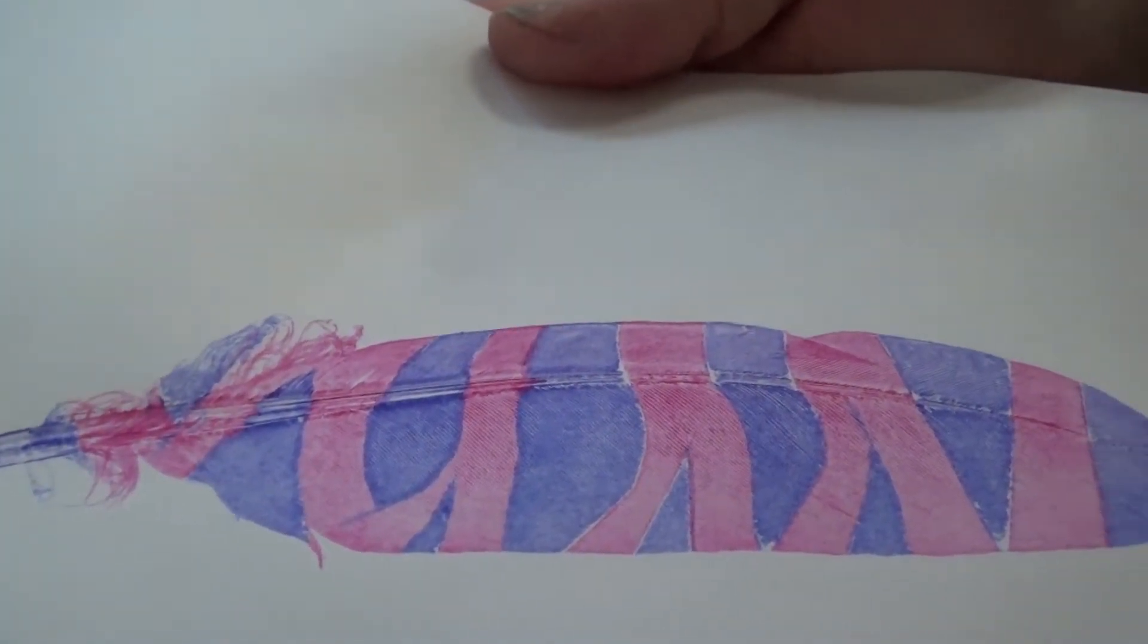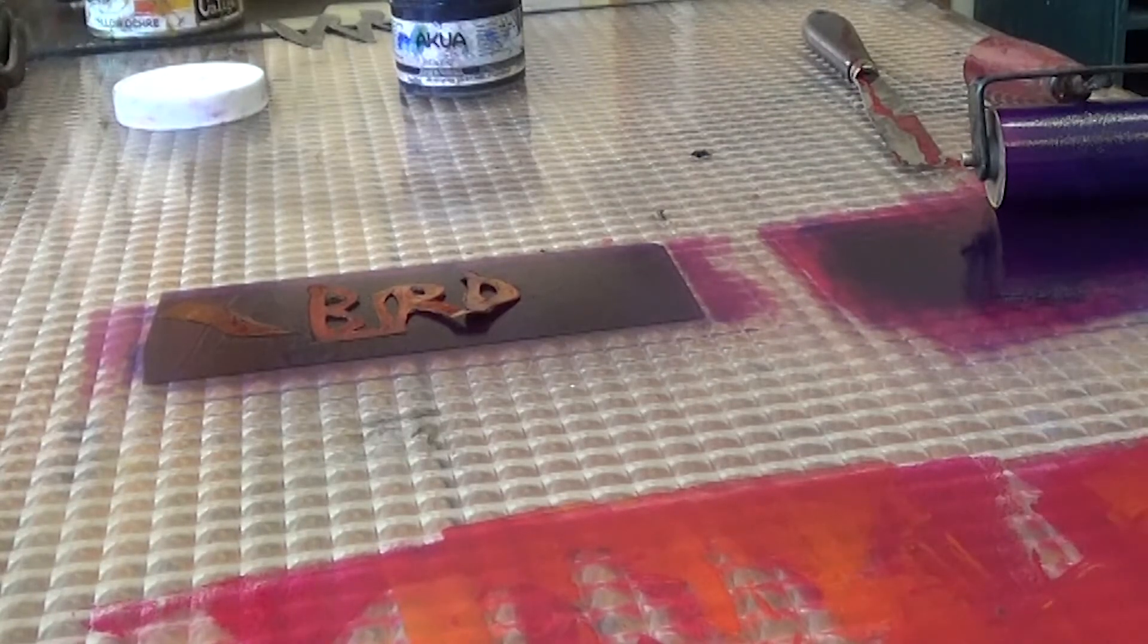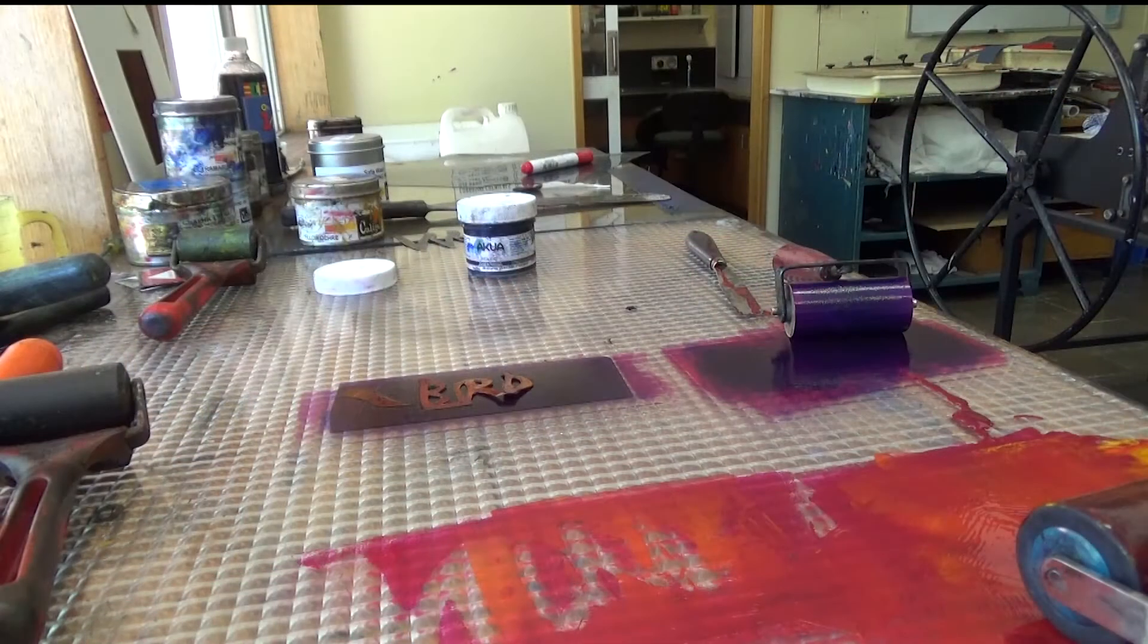This time I've dampened the paper. So what you can see here is the word bird. I'm doing it again. This time using orange and a bit more of a purpley colour.